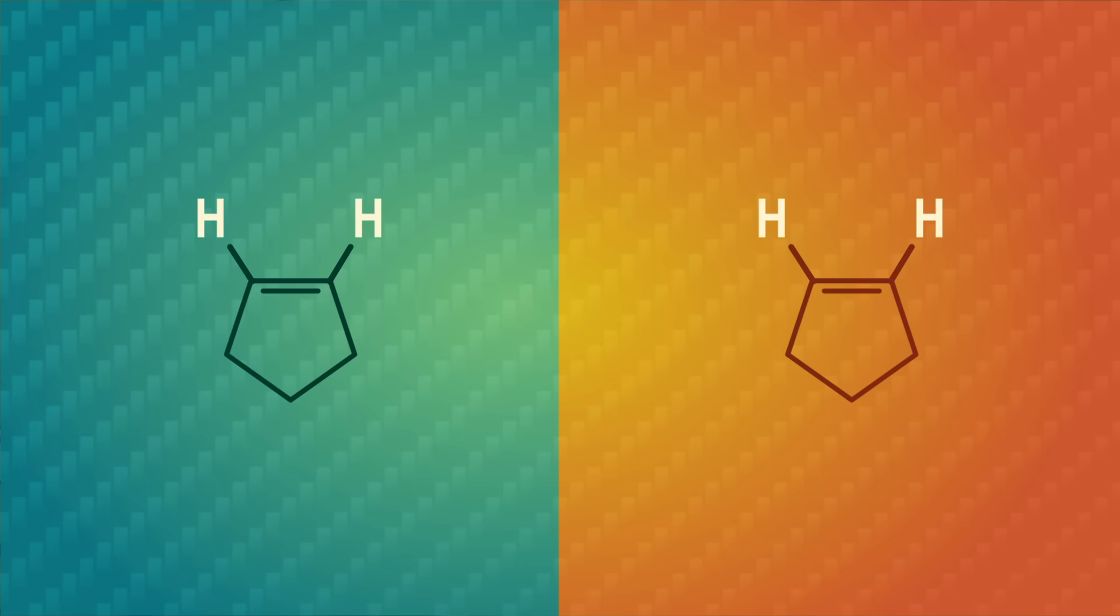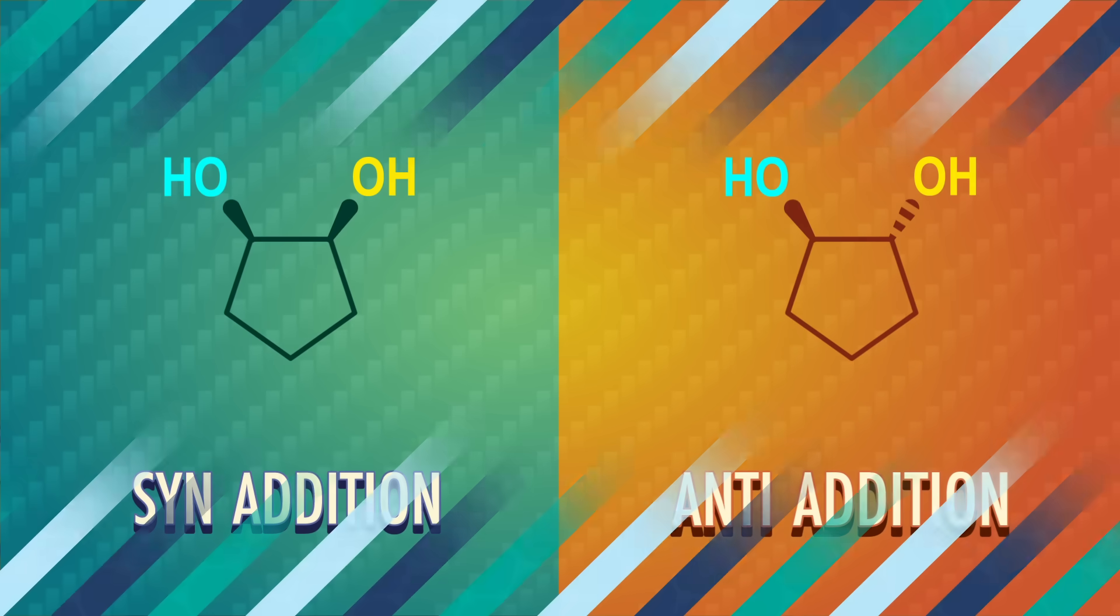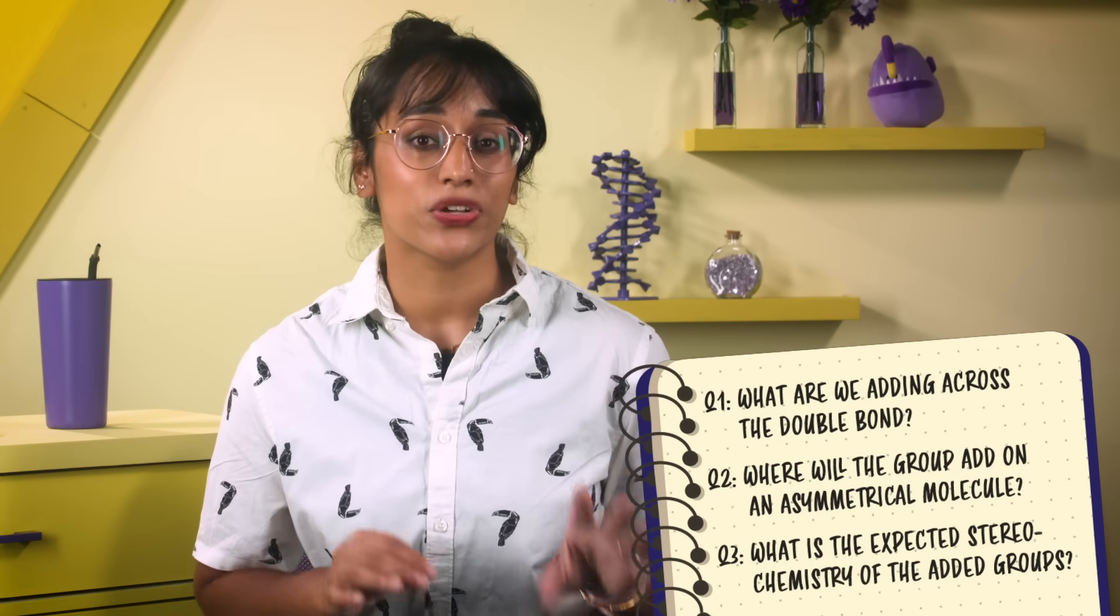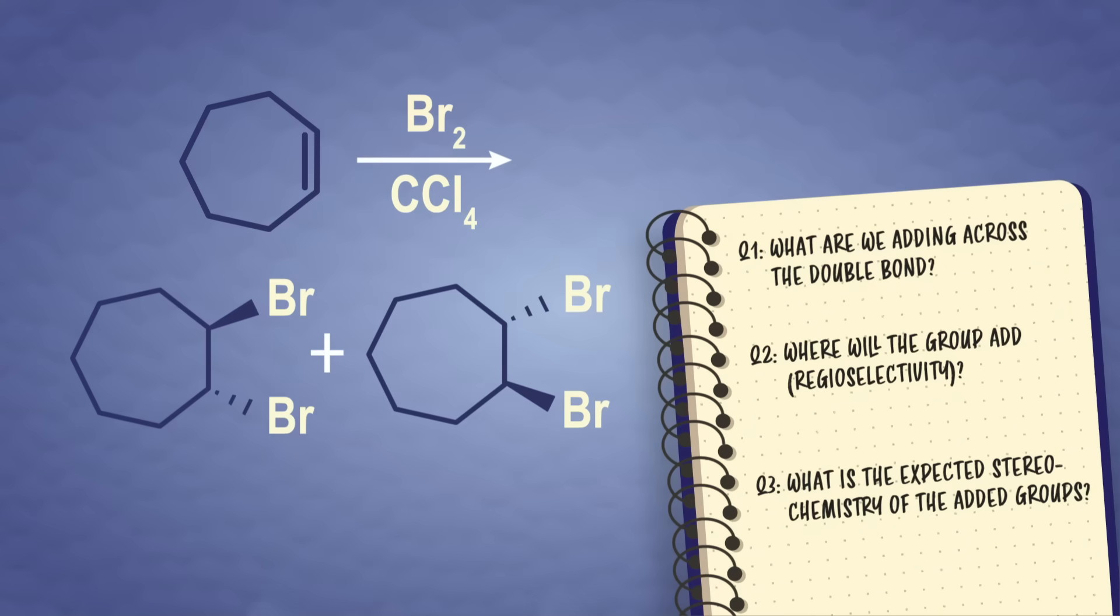Here, we need to pay attention to how the groups add in 3D space. If the groups we're adding add to the same face of the double bond, it's called syn-addition. Or if they add on opposite faces, it's called anti-addition. That's it! These three questions are the key to deciphering the secret handshakes of addition reactions.